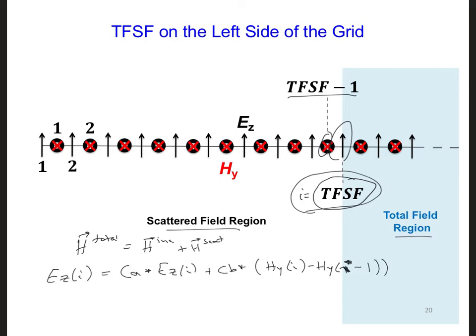But since this Hy right here to the left of the Ez component is only a scattered field, whereas all the other components are total fields, what we need to do is add on, or in this case, subtract because of this minus sign right here, the incident Hy value at I minus 1.